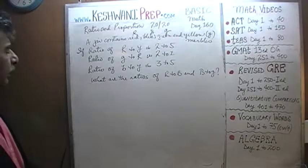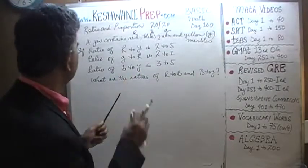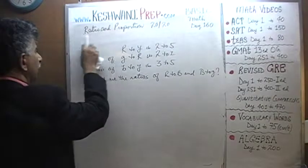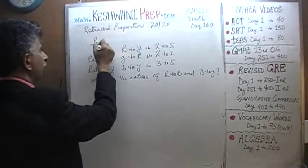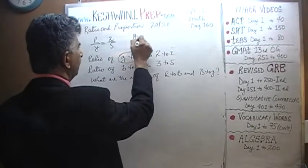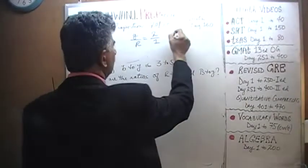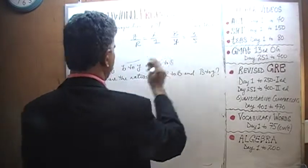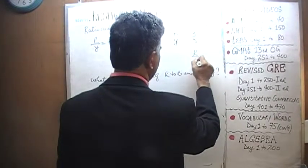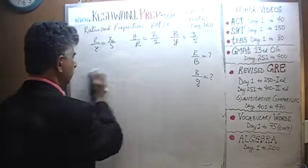First thing first, we are going to need a lot of room in here, so I am going to have to erase as we start writing. Red to yellow is 2 to 5 — let's put it up here. Red to yellow is 2 to 5. We also know the ratio of blue to yellow: blue to yellow is 3 to 5. What we want to find out is the ratio of red to blue, and blue to green.